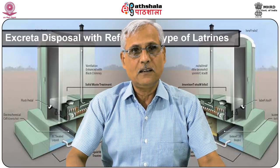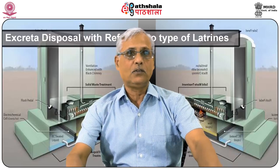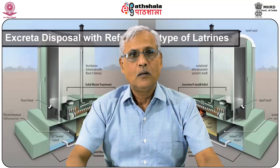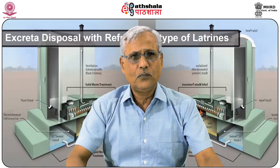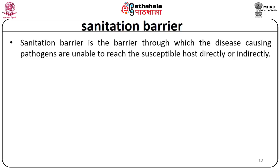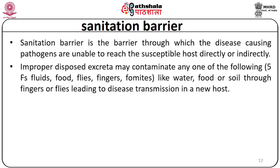Now after discussing social barriers, I would like to discuss sanitation barriers. A sanitation barrier is a barrier through which disease-causing pathogens are unable to reach the susceptible host directly or indirectly. Improperly disposed excreta may contaminate any of the five Fs, commonly known as fluids, food, flies, fingers, and fomites — like water, food, or soil — leading to disease transmission in a new host.